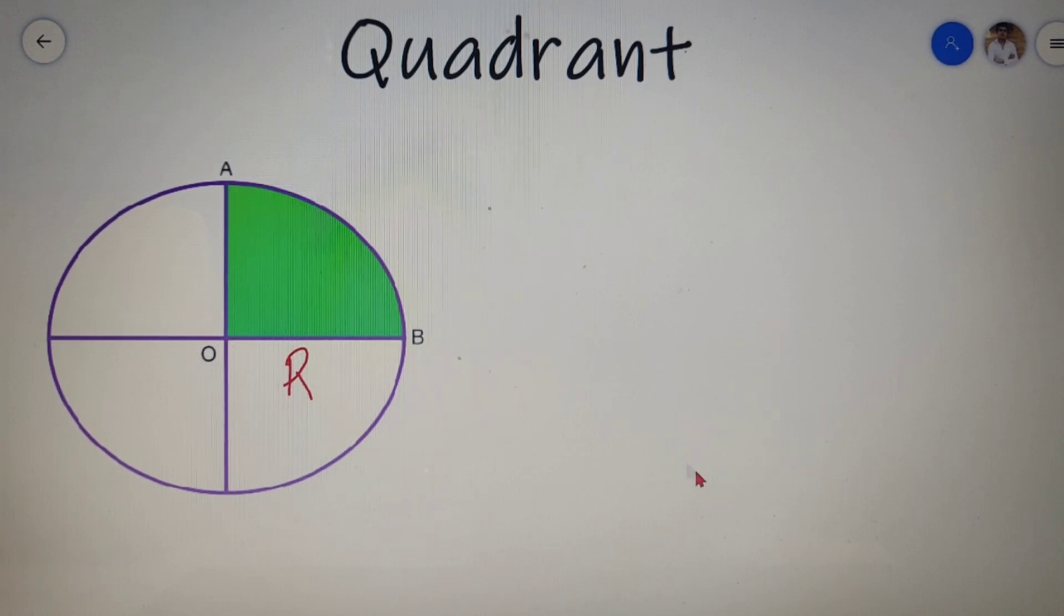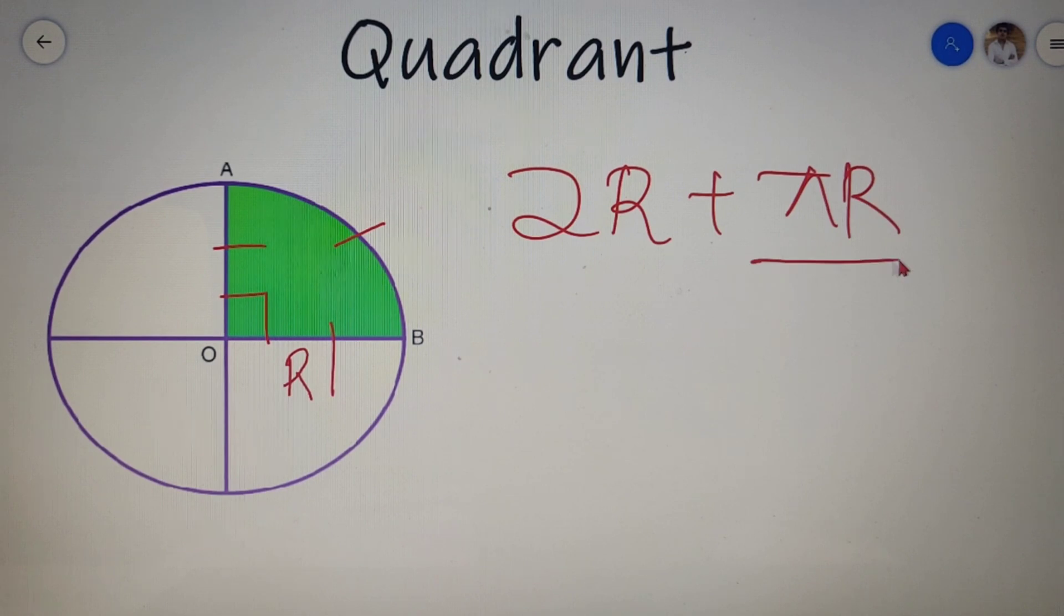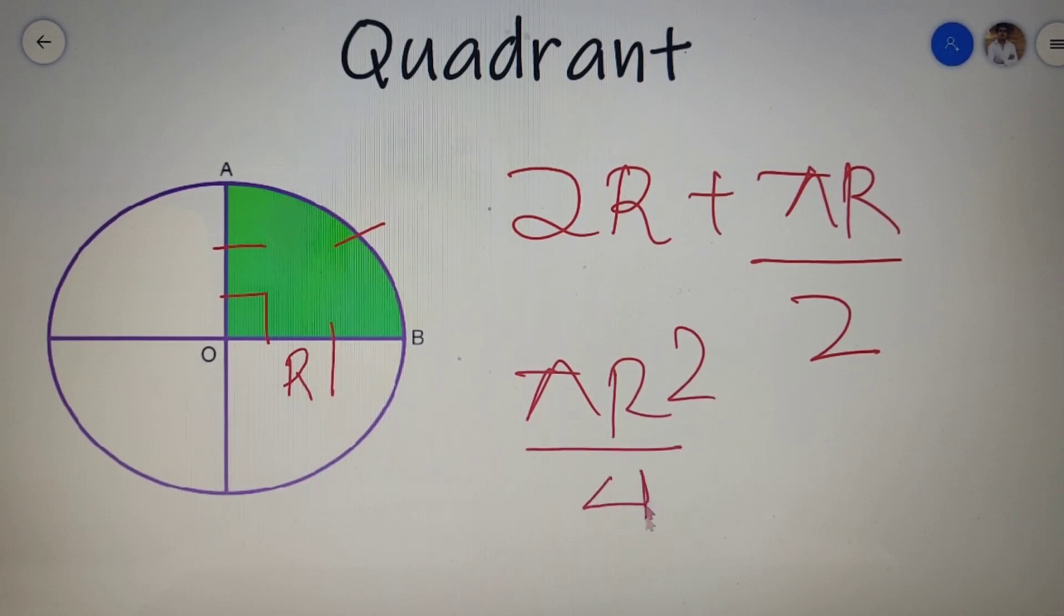Let's do a quick summary of all the topics covered in this video. The angle contained at the center of the quadrant is a right angle. A quadrant is formed by two bases, AO and OB, and one arc AB. If we know the radius of the quadrant, then the perimeter of the quadrant is equal to 2R plus πr, whole divided by 2. And the area of the quadrant will be equal to πr² divided by 4.